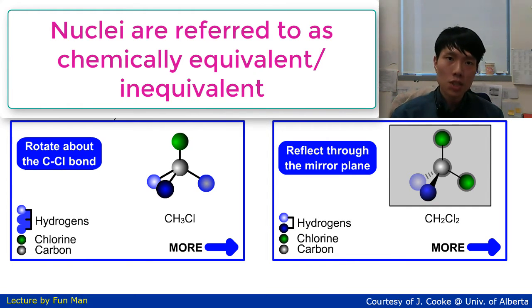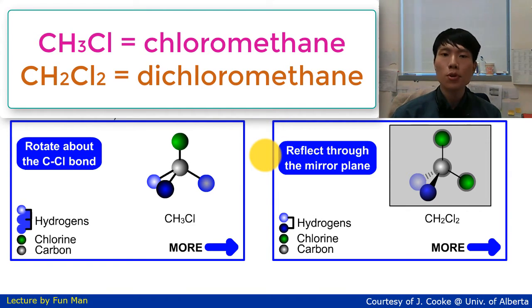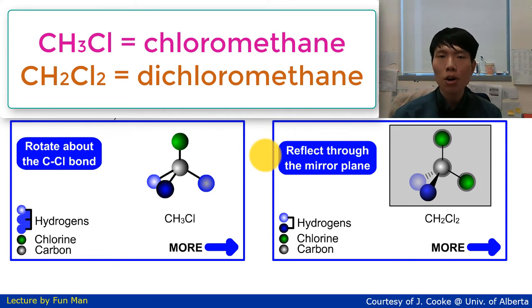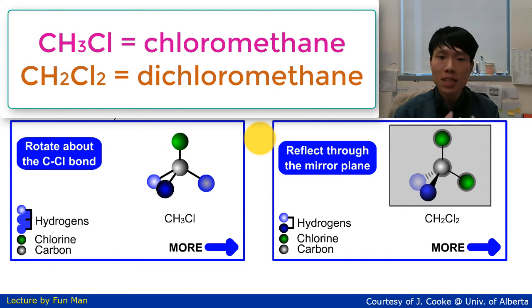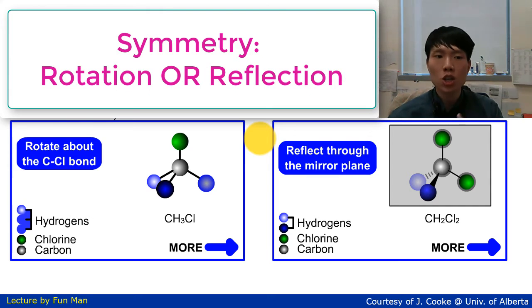For example, both CH₃Cl (chloromethane) and dichloromethane (CH₂Cl₂) provide one resonance each in a proton NMR spectrum. From this we can infer that the individual hydrogens in each of these molecules are chemically equivalent. The reason for this is that the hydrogens in each are related by symmetry elements — specifically, reflection through a mirror plane or rotation about an axis — and hence these protons are identical.